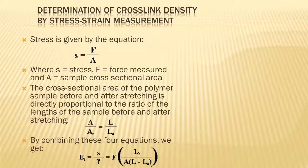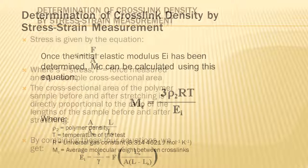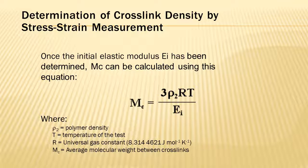With these two equations, you can get this equation where you can find the initial elastic modulus. Using initial elastic modulus, you can plug it into this formula where you can find the average molecular weight between cross-links, and from there you can find the cross-link density.